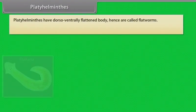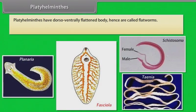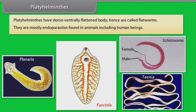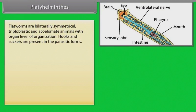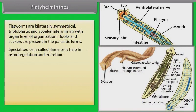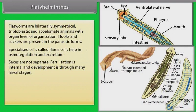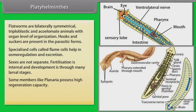Platyhelminthes have a dorso-ventrally flattened body, hence are called flatworms. They are mostly endoparasites found in animals including human beings. Flatworms are bilaterally symmetrical, triploblastic and acoelomate animals with organ level of organization. Hooks and suckers are present in the parasitic forms. Specialized cells called flame cells help in osmoregulation and excretion. Sexes are not separate; fertilization is internal and development is through many larval stages. Some members like Planaria possess high regeneration capacity.